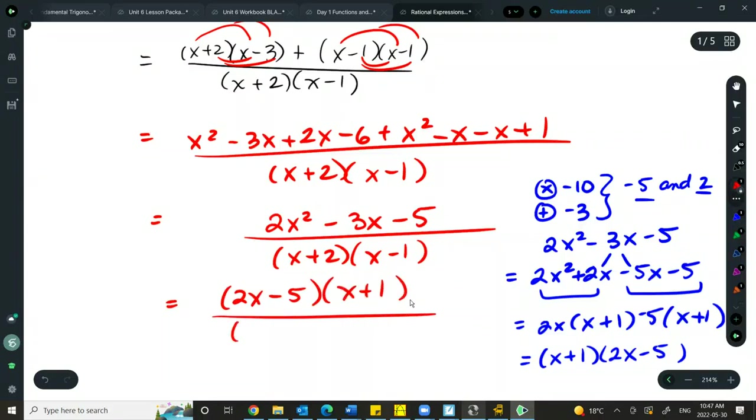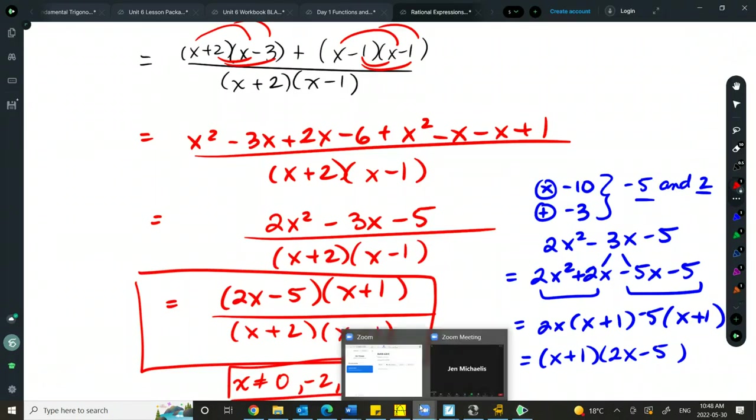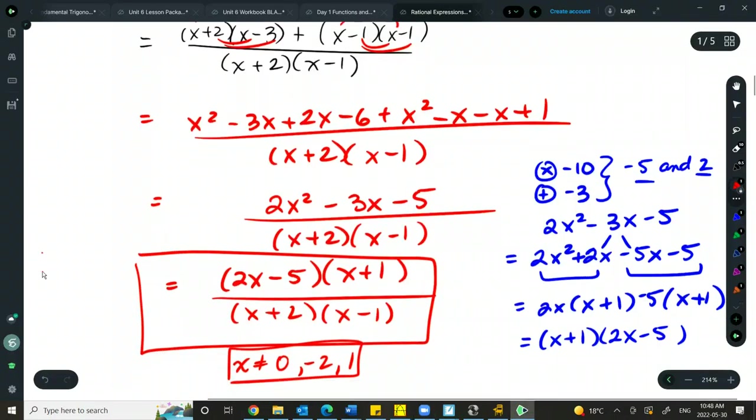We always want to check to see if we can factor that final expression in the numerator because sometimes we might be able to cancel certain things. In this case, I can't cancel a plus and a minus. These aren't the same. So there's not too much extra that we can do there. But factored form is always simplest form. So if it's asking you to simplify, the factored form of that is your simplest form. And of course, we had our restrictions from above where we have these three restrictions. I'm just going to close this since no one's here.